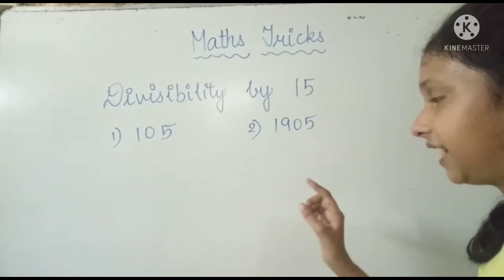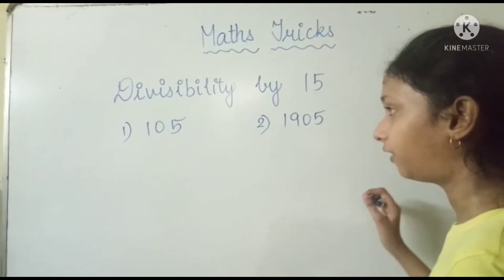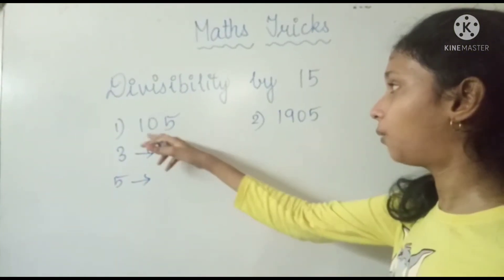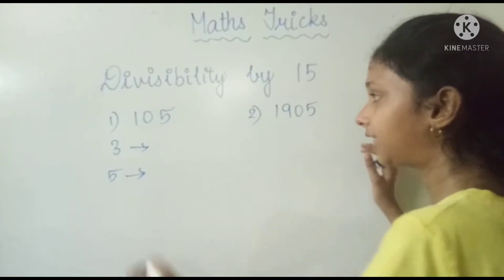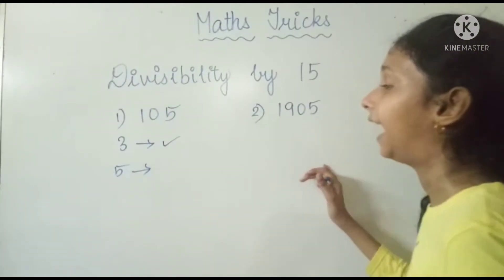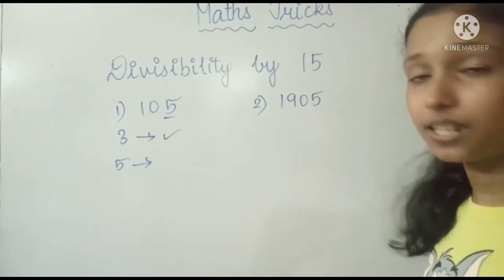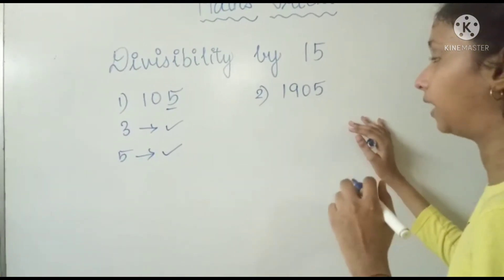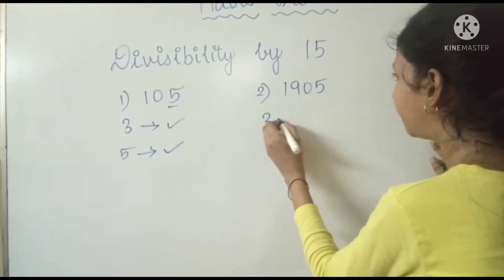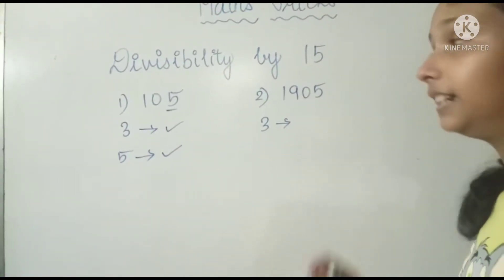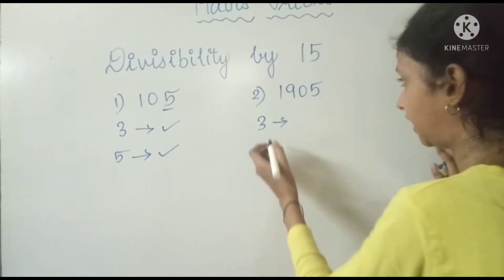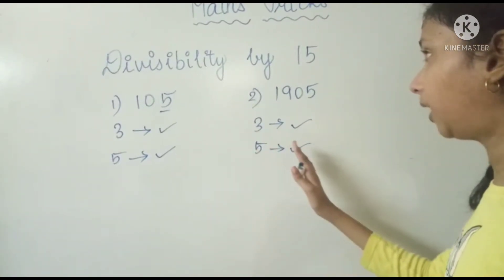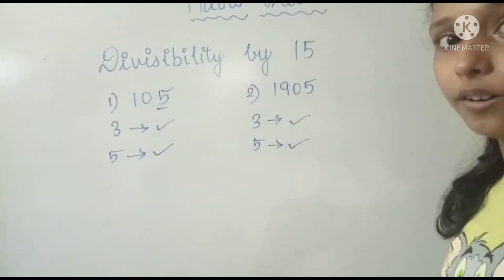Let's take the example 105. For divisibility by 3: 1 plus 5 is 6, and 3 twos are 6 — criteria fulfilled. For 5: the number ends with 5 — also fulfilled. So 105 is divisible by 15. Next example: 1095. For 3: 1 plus 9 is 10, 10 plus 0 is 10, 10 plus 5 is 15 — divisible by 3. For 5: the number ends with 5 — fulfilled. So 1095 is also divisible by 15.